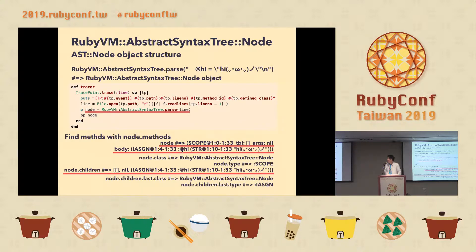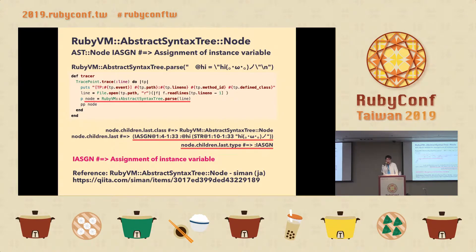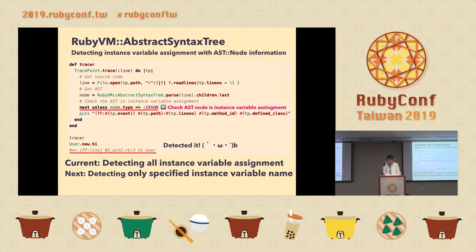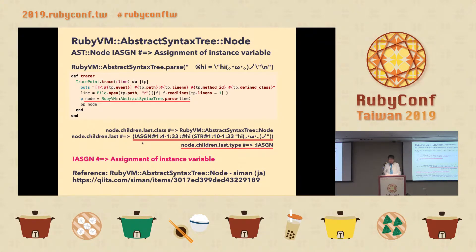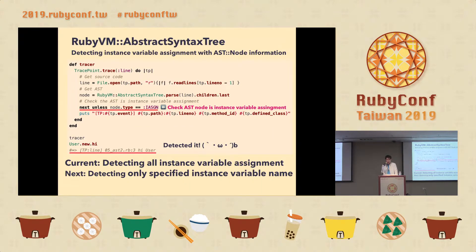We are looking for an AST node object structure that represents instance variable assignment. This AST node object looks like instance variable assignment, and looking at the Ruby source code, the IASGN type means instance variable assignment. So checking whether the AST node type is IASGN, we've written code to check for instance variable assignment. The check is: AST node type equals IASGN.